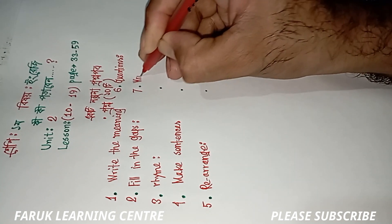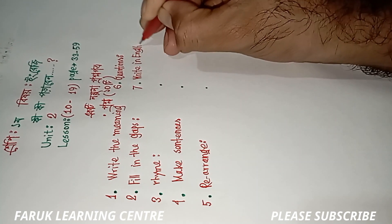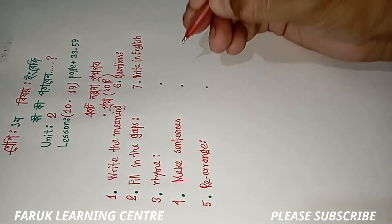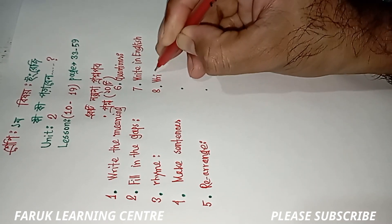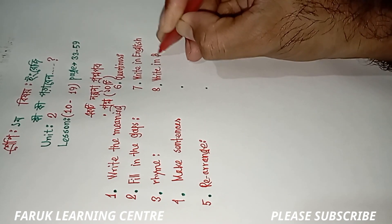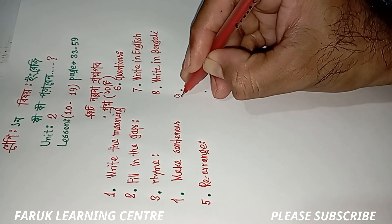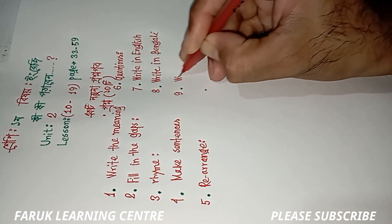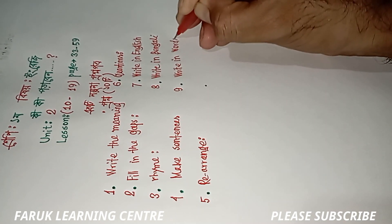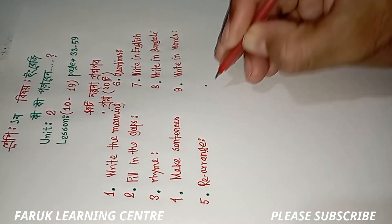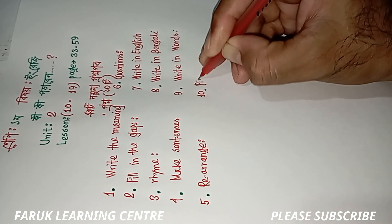Number seven: write in English. Number eight: write in Bengali. Number nine: write in words. Number ten: picture name.